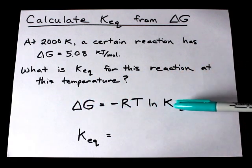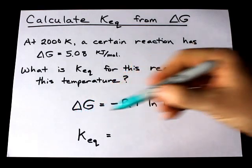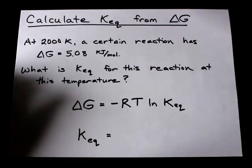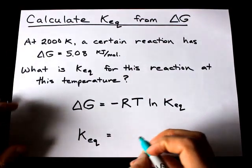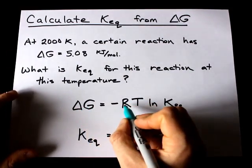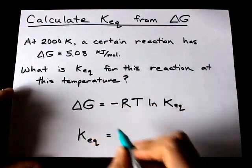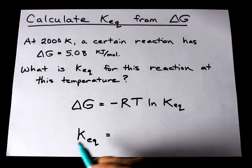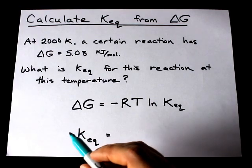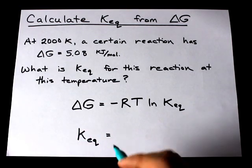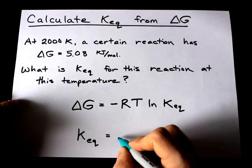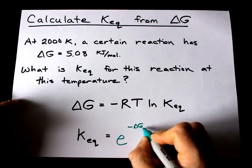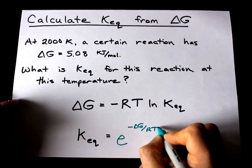Given this mathematical relationship we can rearrange and get an equation for KEQ. It is a very common equation that you might as well memorize. To move the negative RT to the other side you simply divide, and to get rid of the natural logarithm you raise e to the power of both sides. Thus the equation we're looking for is e to the power of negative delta G divided by RT.